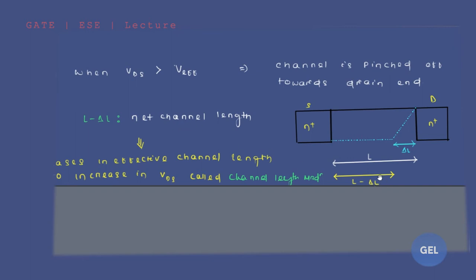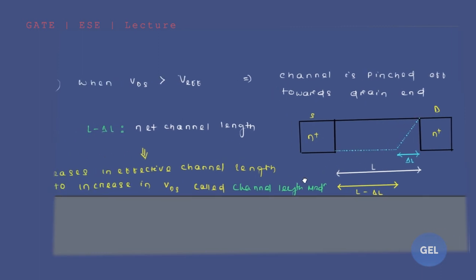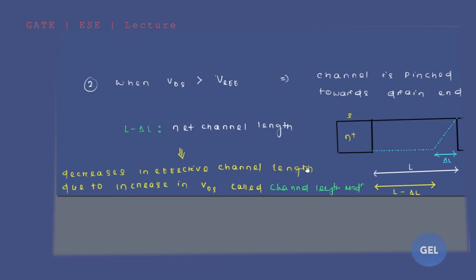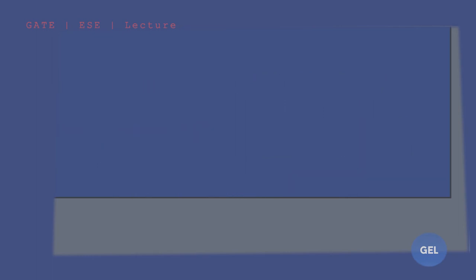This net channel length, L minus ΔL, will keep decreasing as you increase VDS beyond V_effective. The channel shortens progressively — this decrease in effective channel length due to increase in VDS is what we call channel length modulation.